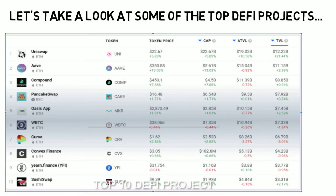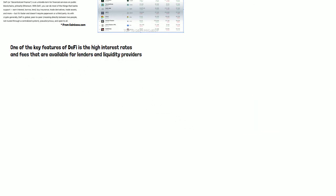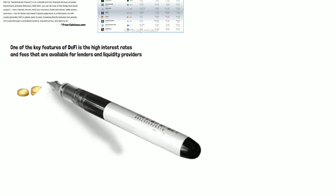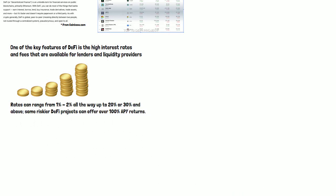One of the key features of DeFi is the high interest rates that you can get. The high interest rates and fees available for lenders and liquidity providers on DeFi are really nice, because in traditional banks you're not going to get that much. Rates can range from 1% to 2%, all the way up to 20% to 30% and above. Some of the riskier DeFi projects can offer over 100% APY return, meaning doubling your money in the course of a year. Of course, they are riskier, so not guaranteed. Traditional bank accounts are offering somewhere in the range of 0.001% to 0.0001% if you're lucky, and you're probably not even getting a statement on your interest anymore. There's really a big difference in what you can earn in DeFi versus traditional banking.